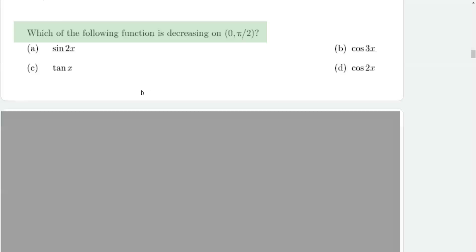So, let's begin with the first part. We have f(x) as sine 2x. So, f dash x is what? 2 cos 2x. Now, the interval is 0 to π, which is first quadrant.